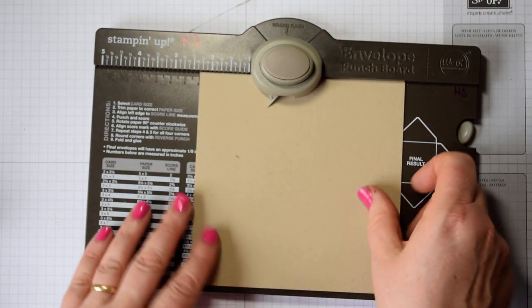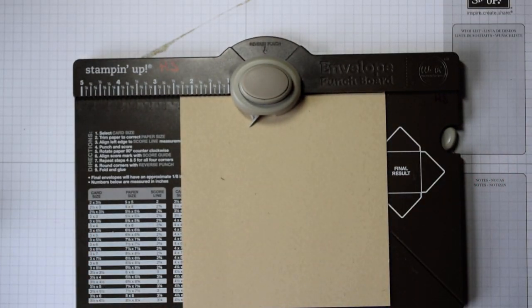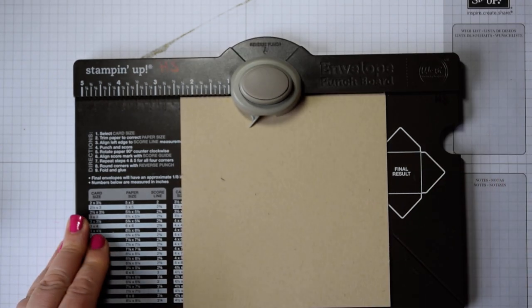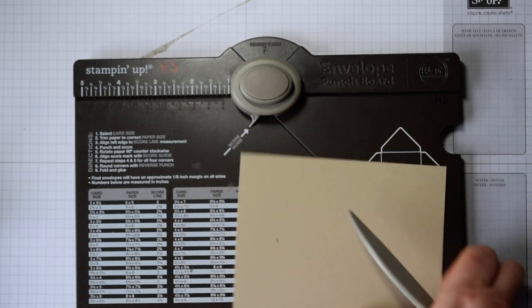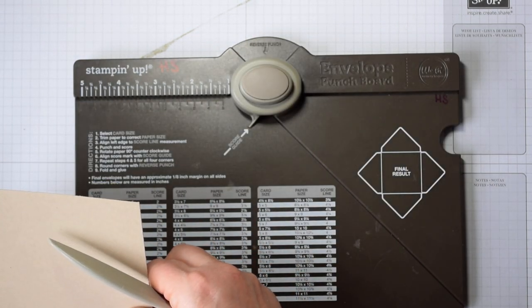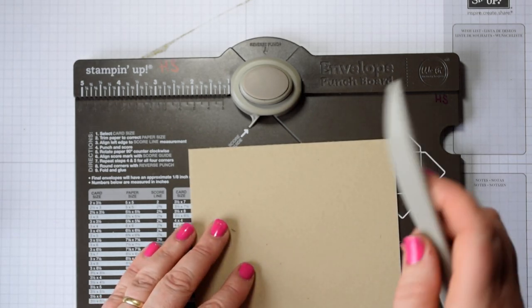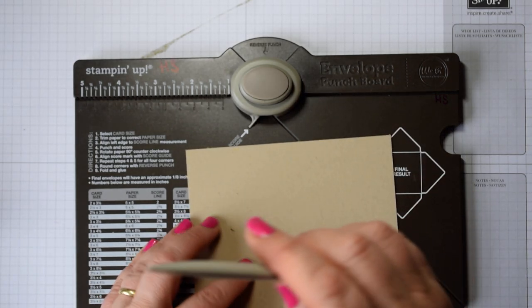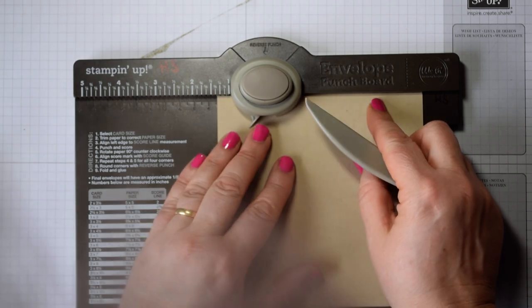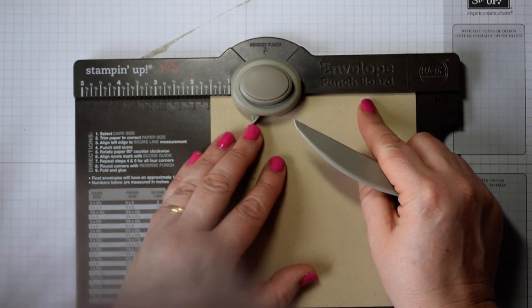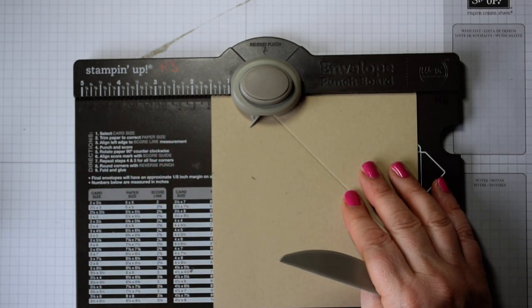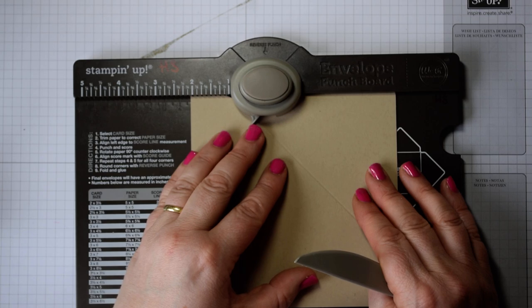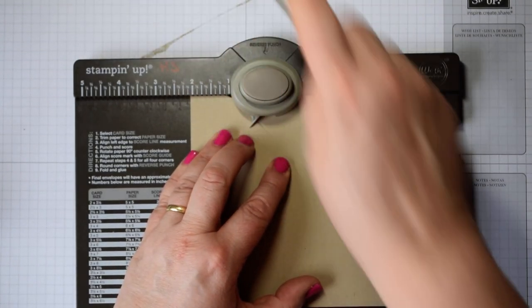It's an envelope punch board box. I've used crumb cake cardstock and I am doing these in millimeters. You need a piece of cardstock that is 14.2 by 14.2, which in inches is 5 and 5 eighths square. And you are going to punch and score at 39, that's 3.9 centimeters, so that's half an inch. And also you're going to punch and score at 53 millimeters, which is 2 and 1 eighths.